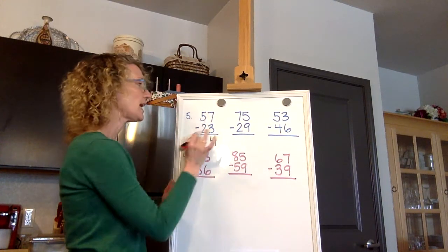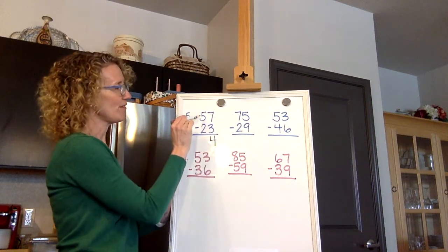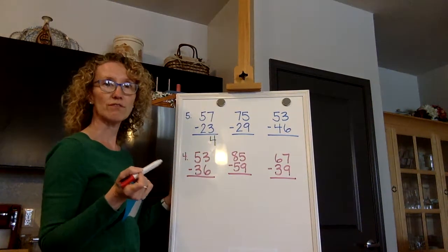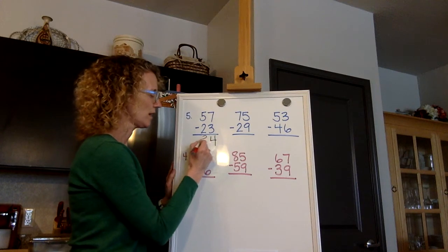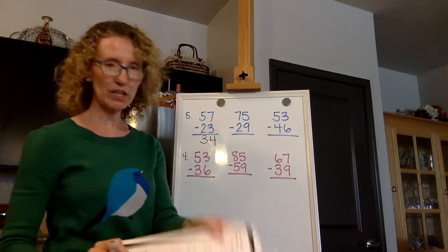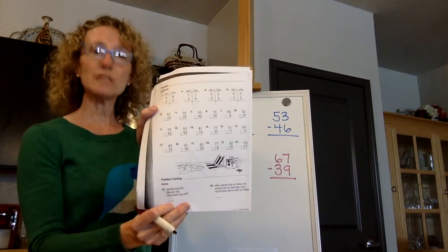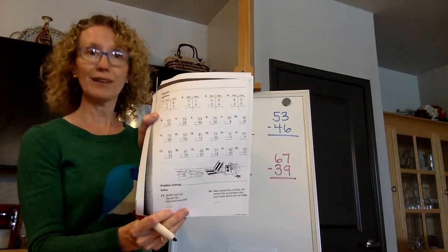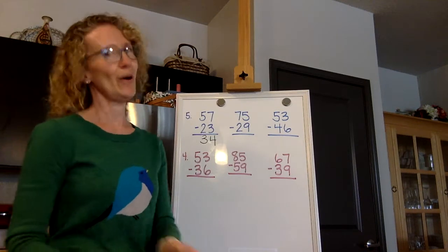So we don't have to do any switching around. And then five minus two. Five, four, three. Thirty-four. That's the answer and that one's done. Number five on the beach chair page. If you need to, take a pause for a second and do that one.